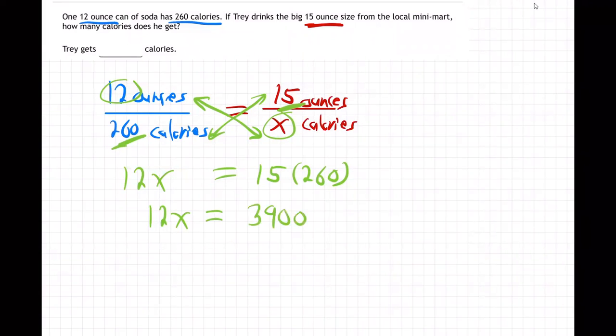And then how do we finish solving for x? Last step: divide by 12. And so we get x equals 300 and 25. So that's the answer.